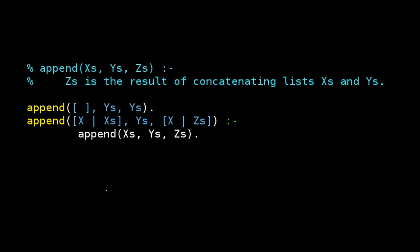Here's a program that defines the append operator. Append of X, Y, Z will be true if Z is the result of appending X and Y, and so X and Y are lists. Here's an example: append list A, B with C, D.